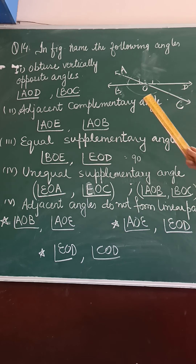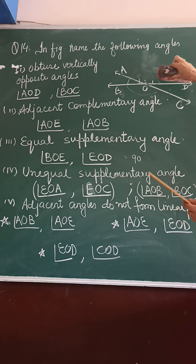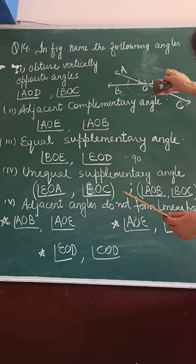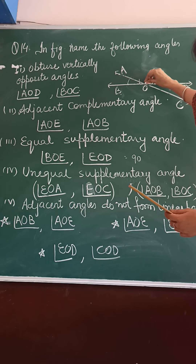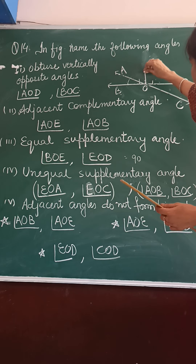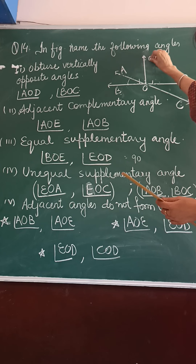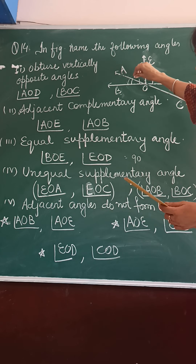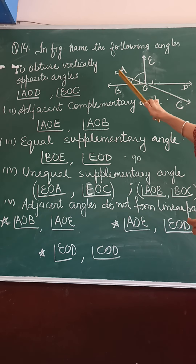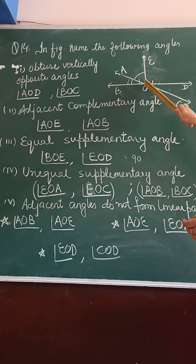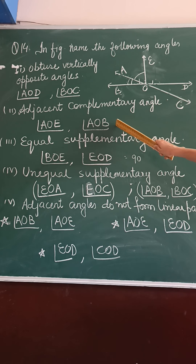Second part: adjacent complementary angle. Adjacent complementary angle means the sum is 90 degrees. Here we are getting these two angles whose sum is 90 degrees. So we are taking angle A, O, B and A, O, E. A, O, E and A, O, B — they are adjacent complementary angles.